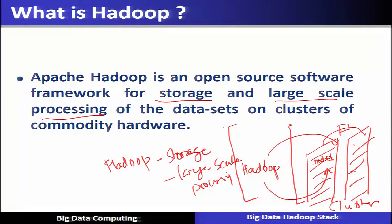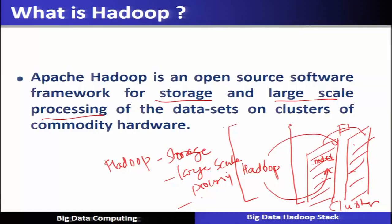By large scale processing, we mean that the data set is too large and it cannot fit in existing conventional systems. One system cannot basically accommodate the entire data set. For a large size data set, it requires hundreds and thousands of machines to store the data. When a computation is to be performed, it is not possible to bring all the data to one place; rather, computation has to be moved wherever the data is stored.